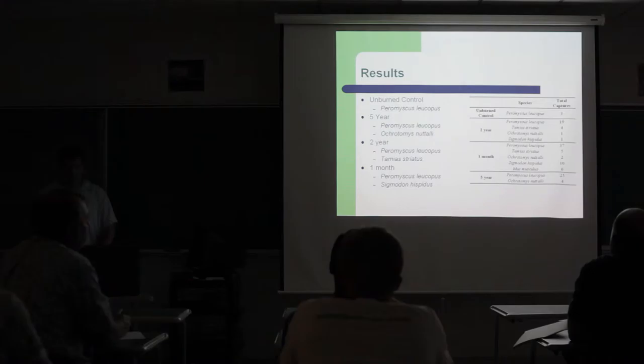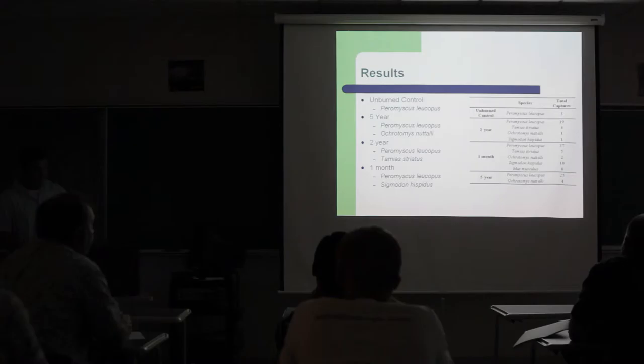This is kind of just going back through that. The unburned control, the dominant species was Peromyscus leucopus. In the five-year, the most common was also the white-footed mouse. Two years, same thing. One month, same thing. Peromyscus is just really common. The one month, the notable there would be the Sigmodon hispidus, which is the hispid cotton rat. That's another notable capture. It was the second most common species captured on the one month.